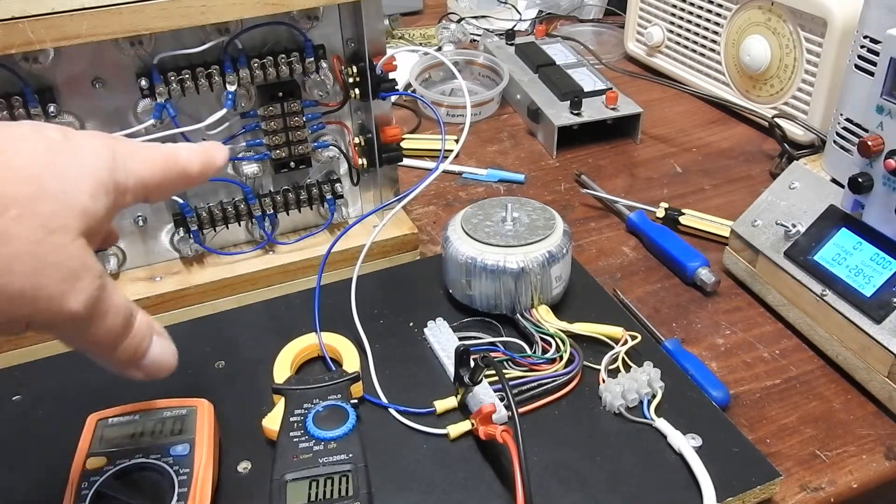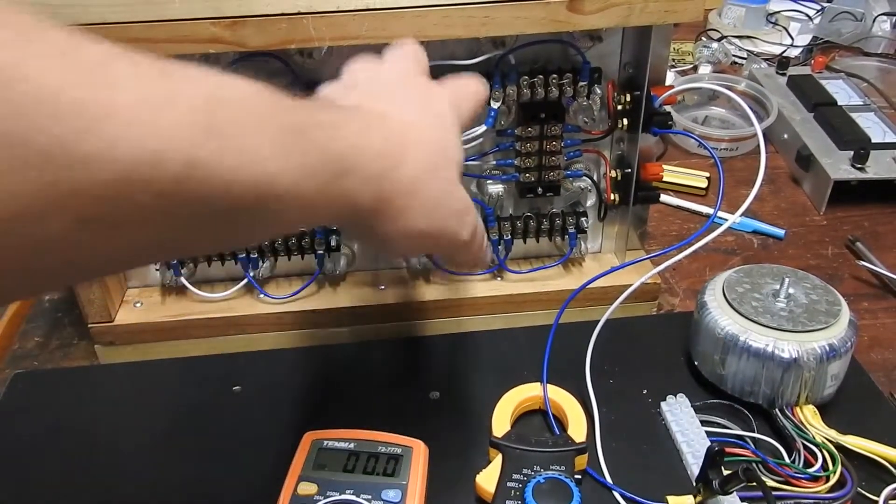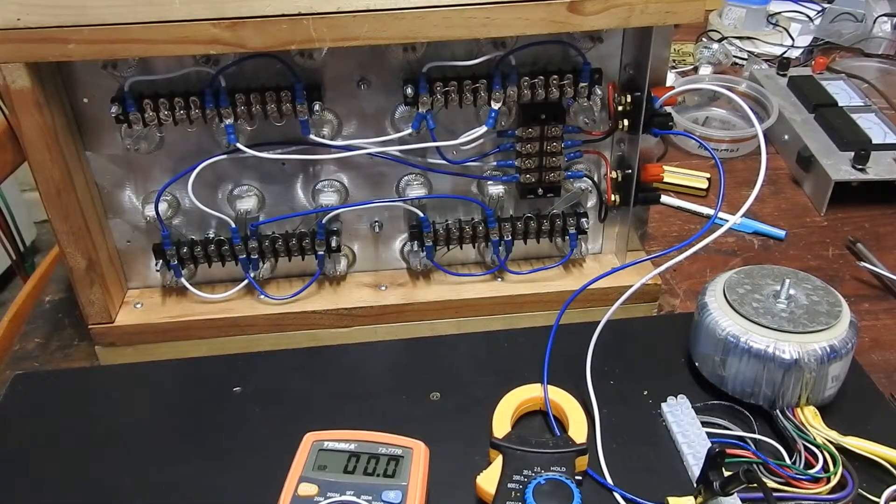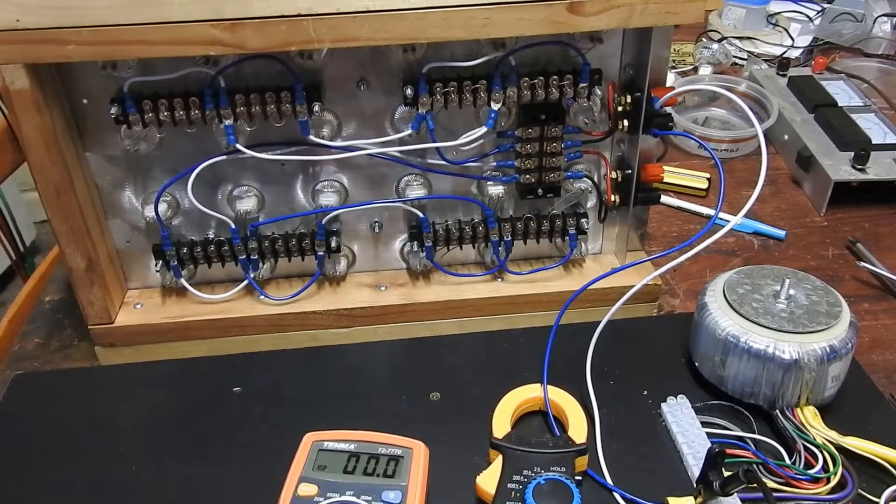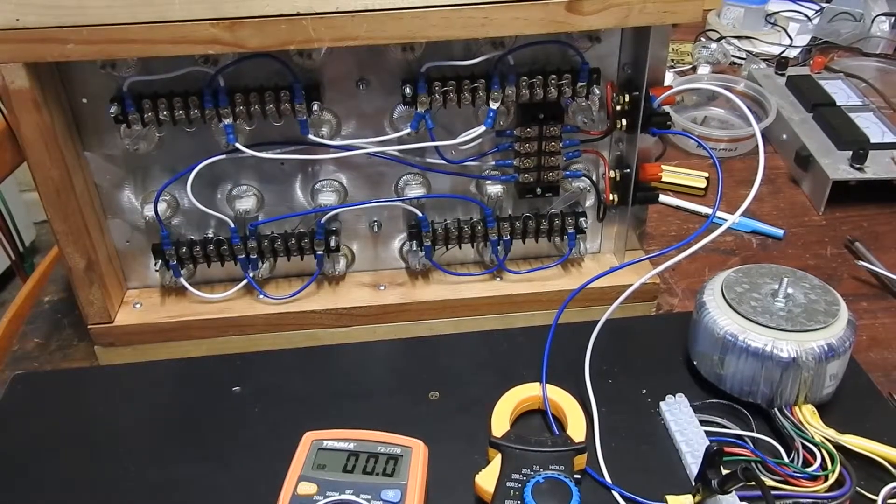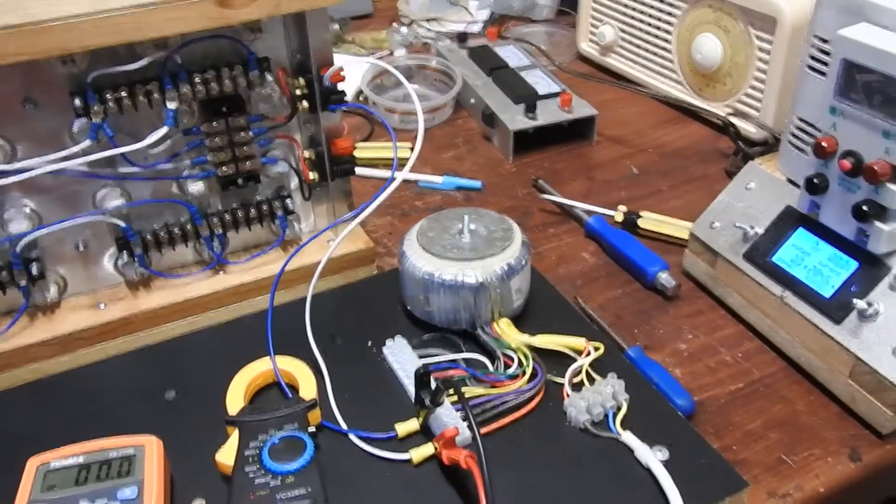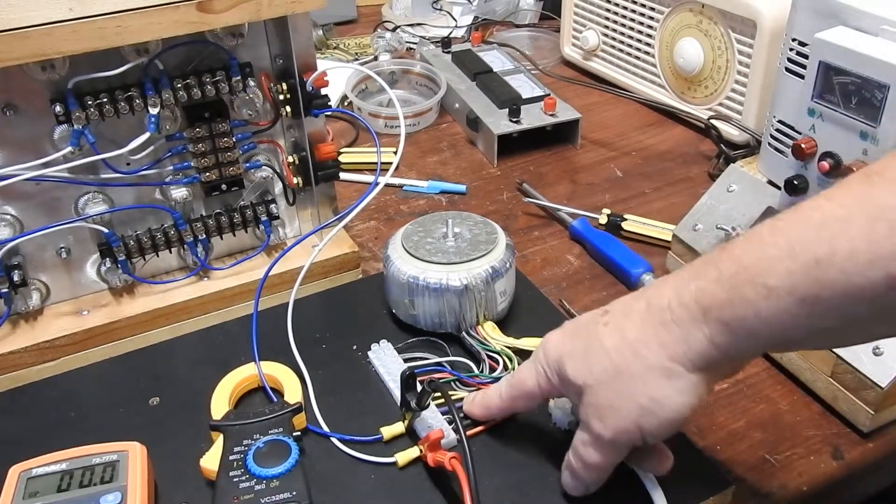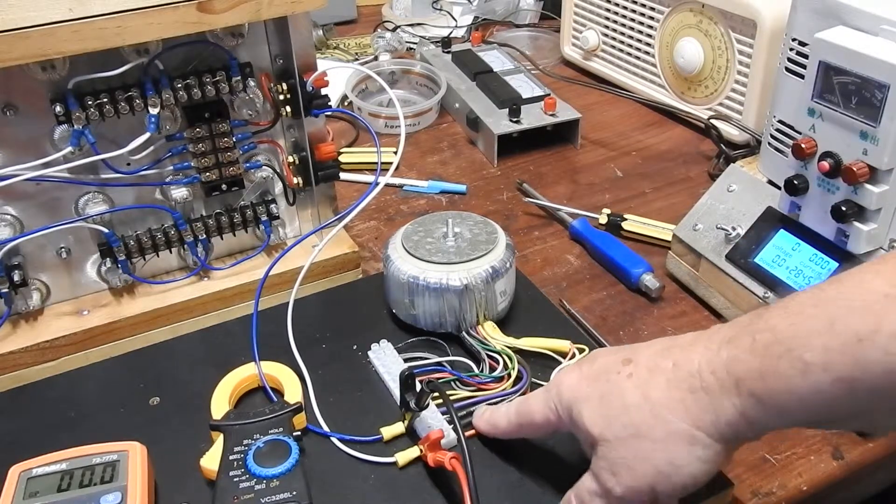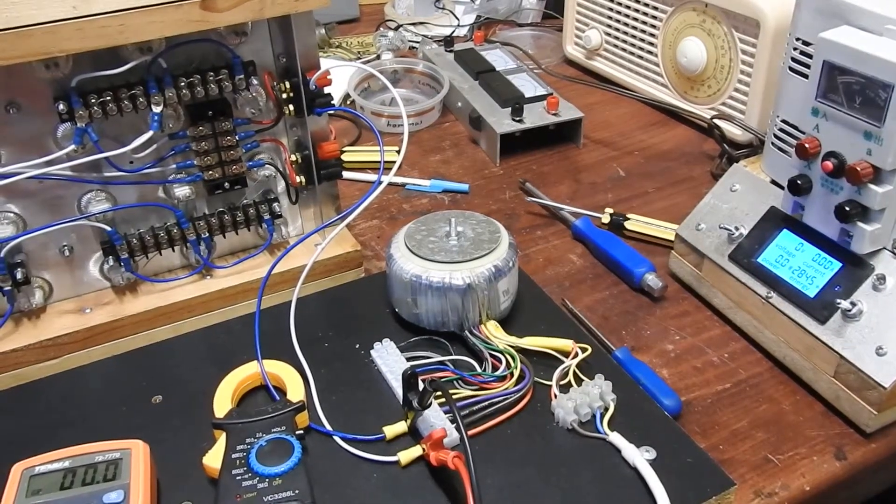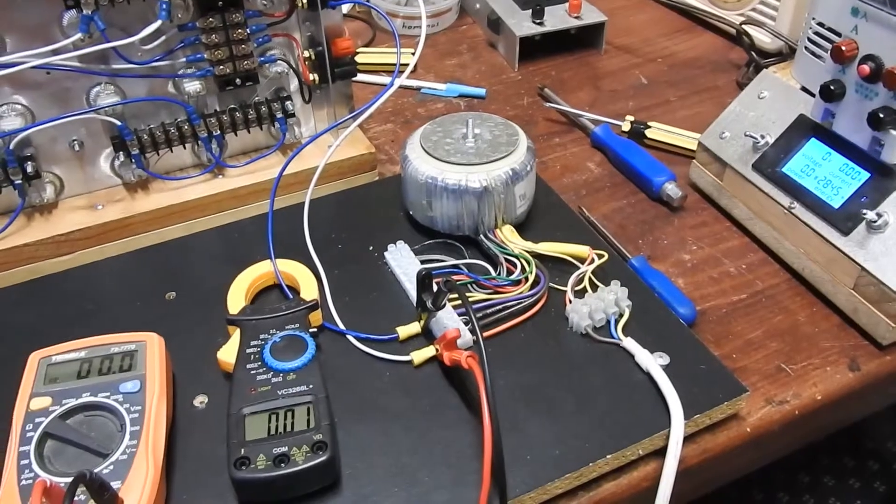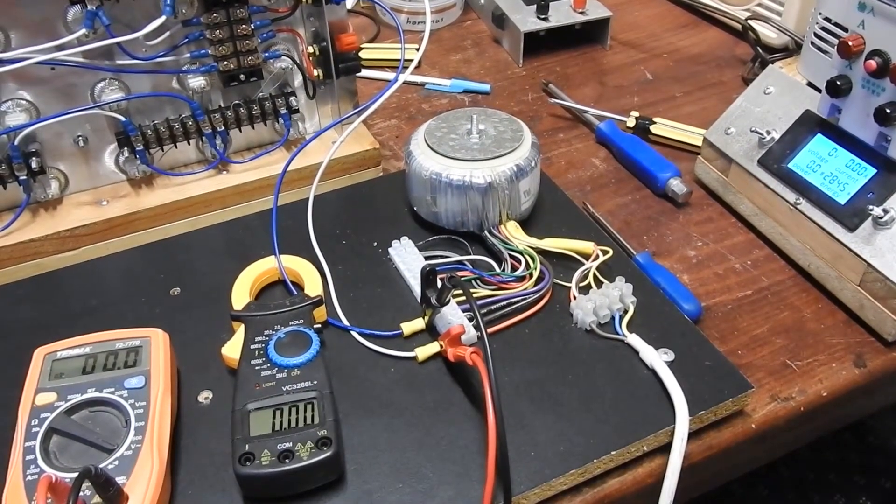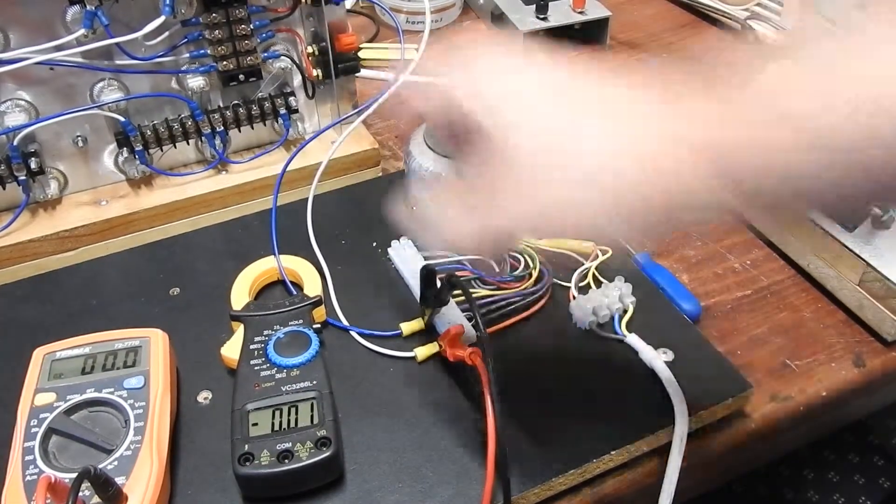So I've connected up the dummy load to have one, two, three, four sets of three bulbs in series. So ideally they'd want to run at 36 volts, but we won't be running that hard. I've got the two heaviest windings on the transformer which are about eight or nine volts each, so they're in series now.